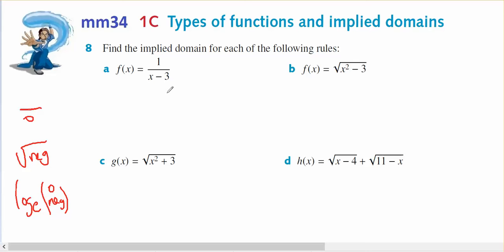So I'm going to go through 8a, b, c and d. In 8a, I've got a denominator, therefore this can't equal zero. So x minus 3 cannot equal zero, which means x cannot equal 3. So the implied domain is all real numbers except for 3.